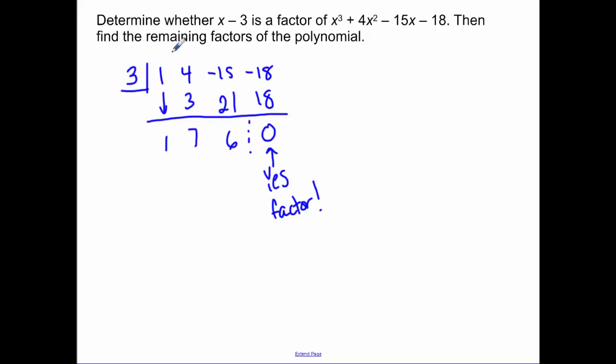So remember, we started with an x cubed here. We reduced our exponent by 1, so this is x squared plus 7x plus 6. So we know that x to the third plus 4x squared minus 15x minus 18 is going to factor to x minus 3, because we got 0 as our remainder, and x squared plus 7x plus 6.